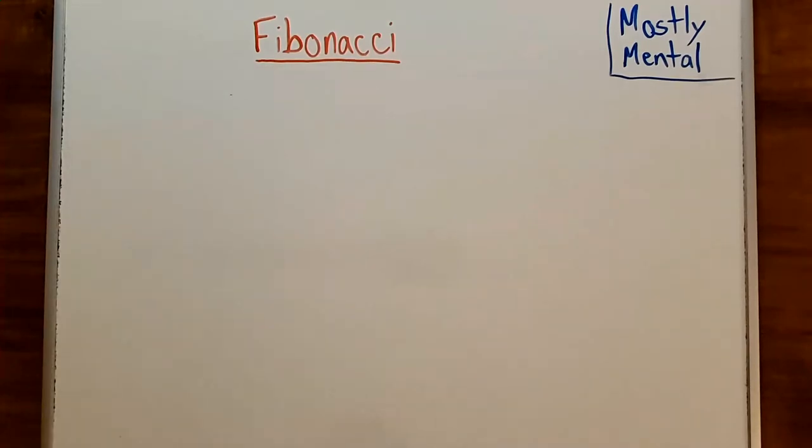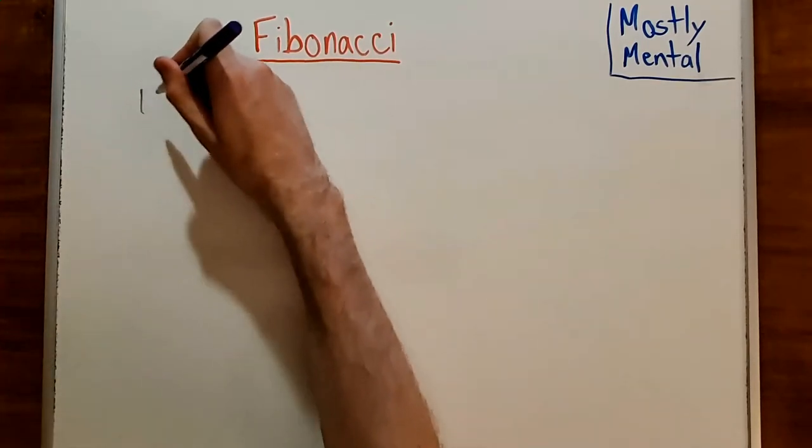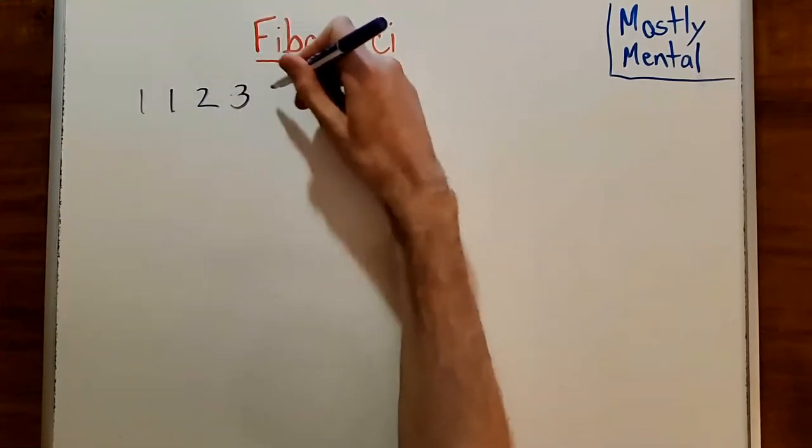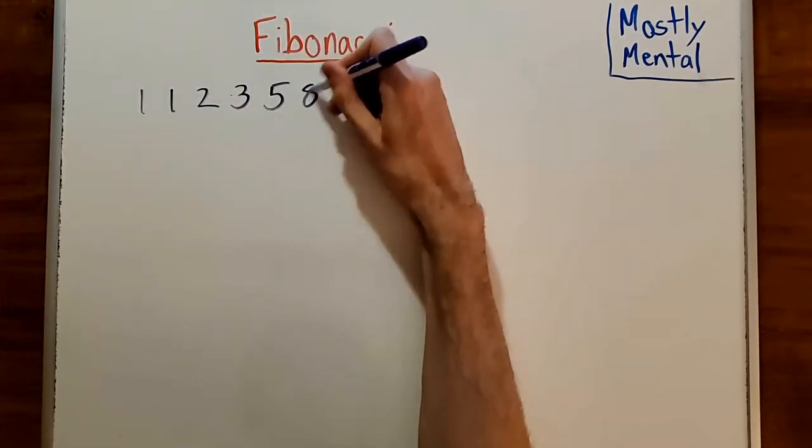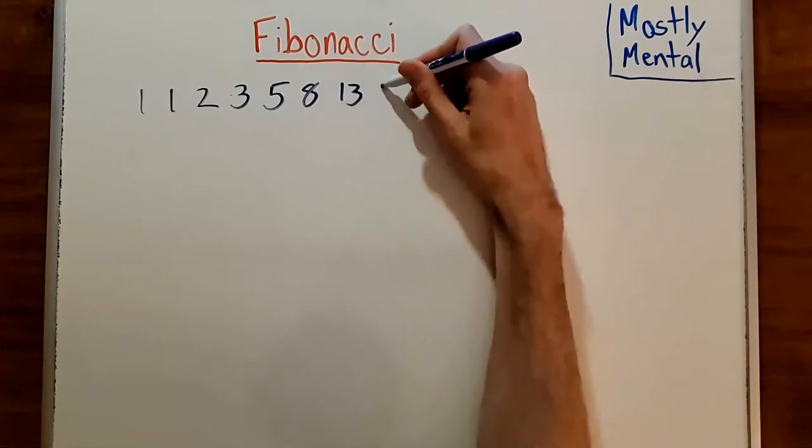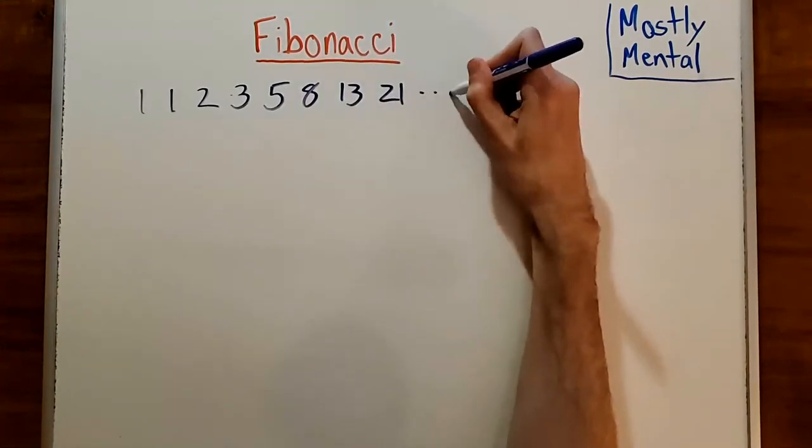The Fibonacci sequence begins 1, 1, 2, 3, 5, 8, 13, 21, and so on.